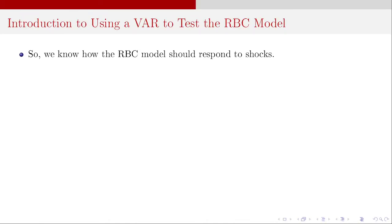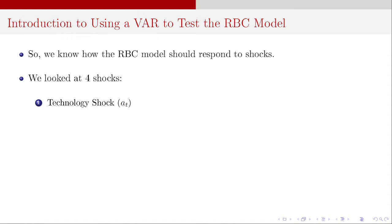We know by this point how the real business cycle model should be responding to shocks because we looked at four different shocks. We looked at the technology shock, which was like the supply shock where there's an increase in technology — an increase in productivity for the representative firm — but at the aggregate that shifts the production function up and therefore triggers a labor demand shock. The real wage rate goes up, production goes up, the aggregate supply curve shifts to the right along a downward-sloping aggregate demand curve, and we see a reduction in prices, which leads to a reduction in the real interest rate.